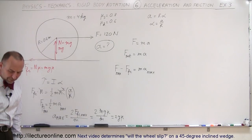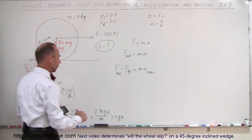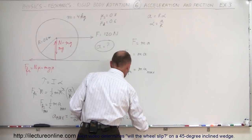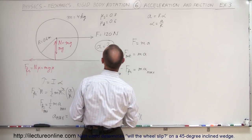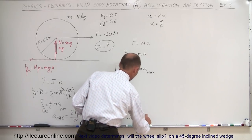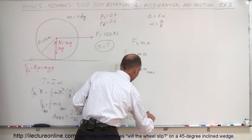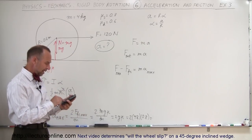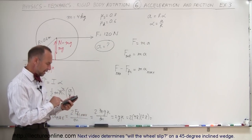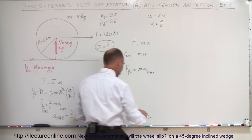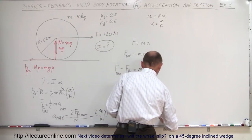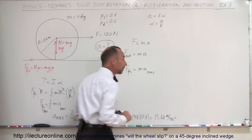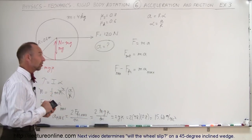Plugging in numbers: A_max equals 2 times 9.8 times mu. The static friction coefficient is 0.8 since the wheel is not slipping, so that's 2 times 9.8 times 0.8, which gives us 15.68 meters per second squared. That's the maximum acceleration this wheel can have before it begins to slip.